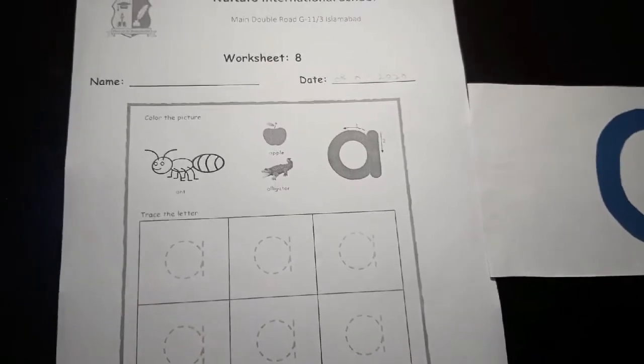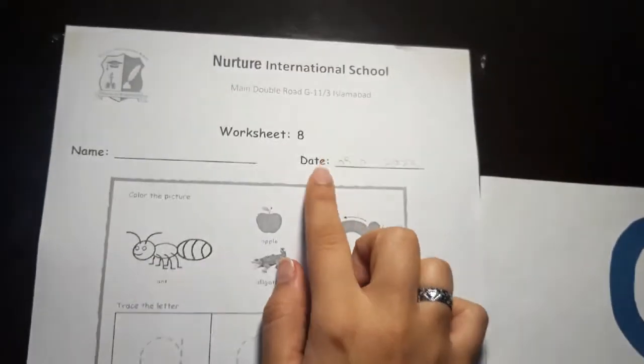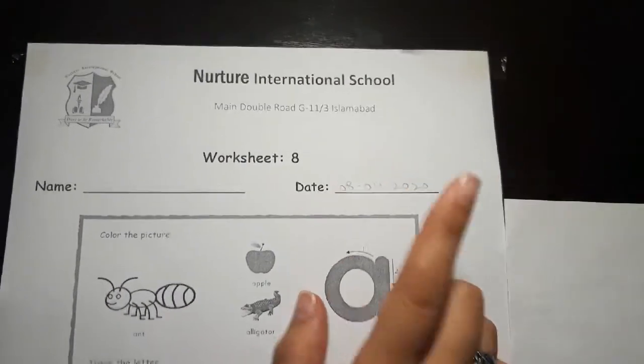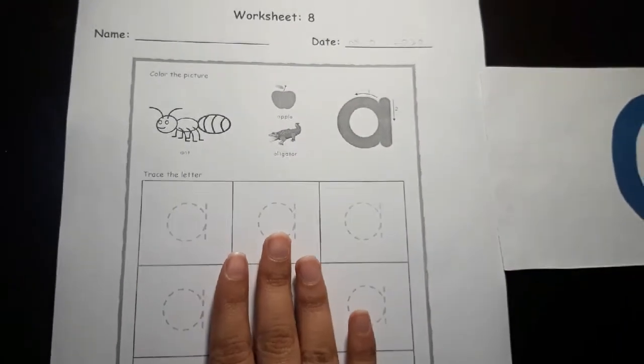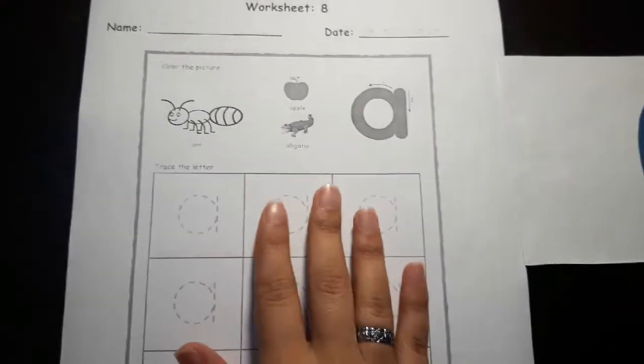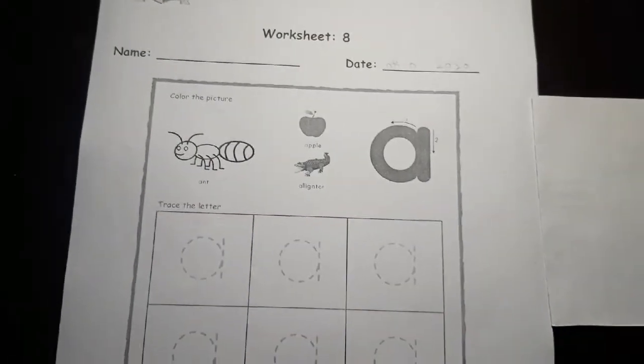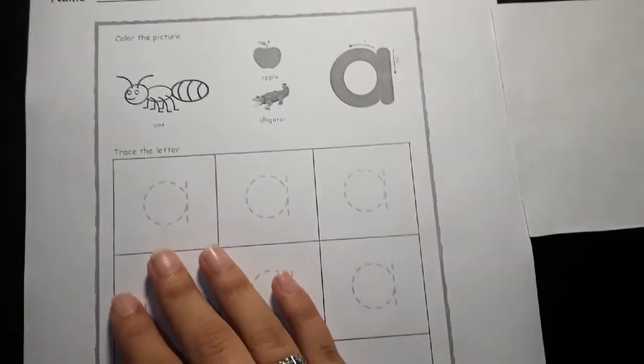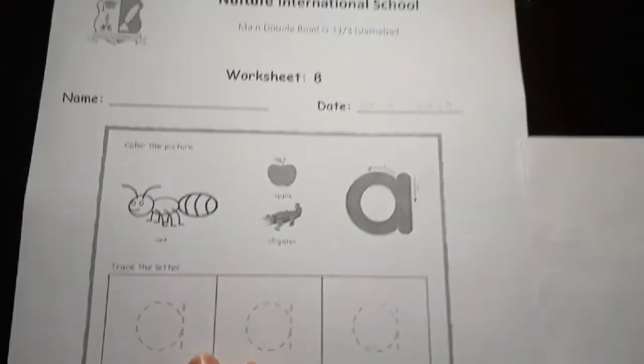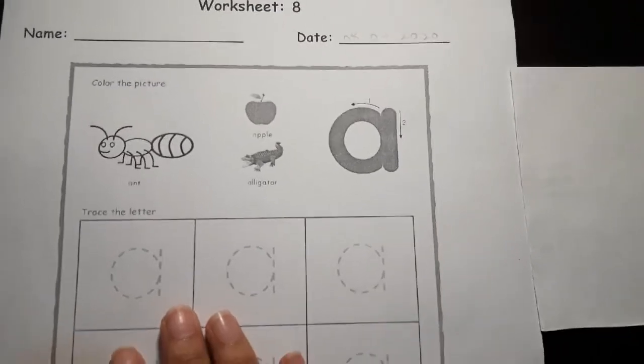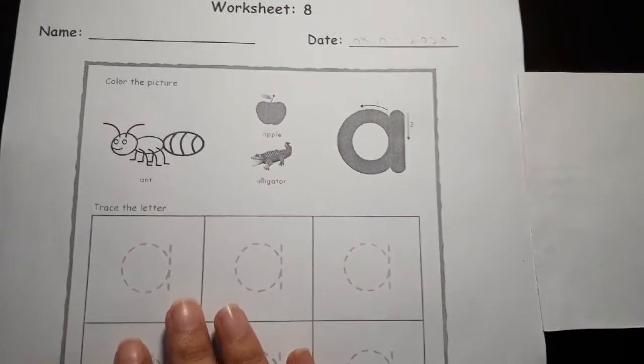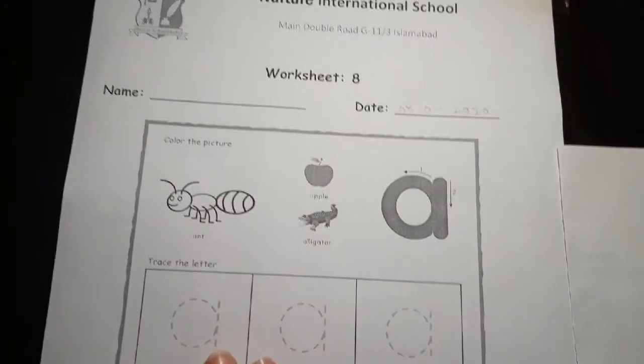Now moving on to worksheet number 8 for today. Please write down the date which is April 8, 2020. We have to trace the letter A. We have done rainbow tracing yesterday and today we are going to trace it with the pencil now. This is the very first tracing. I hope they do it well. I appreciate all your efforts and the response coming from you. It's amazing. Thank you so much.